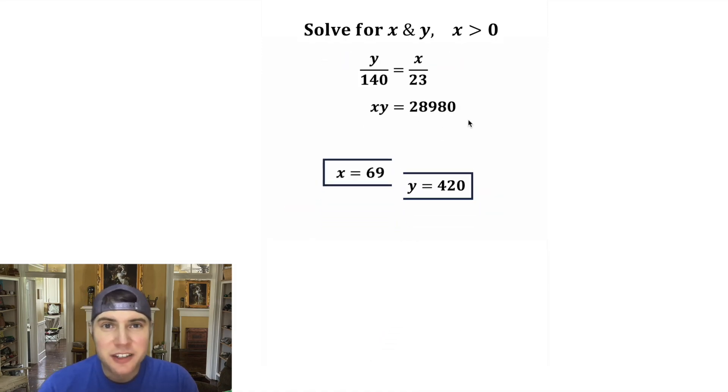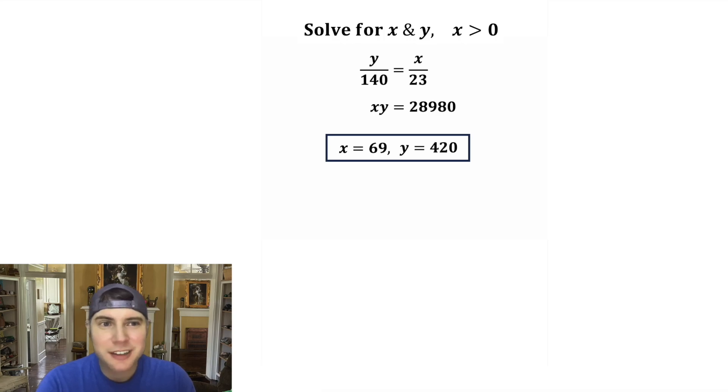So the answers for x and y to this system of equations are x equals 69 and y equals 420. How exciting.